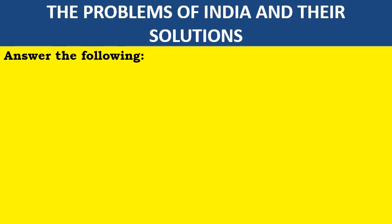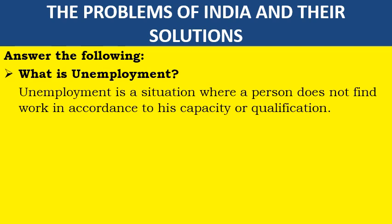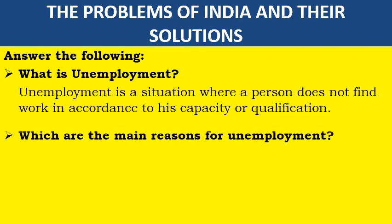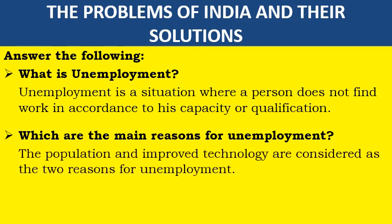What is unemployment? Unemployment is a situation where a person does not find work in accordance to his capacity or qualification. What are the main reasons for unemployment? The main reasons for unemployment are improved technology and overpopulation.